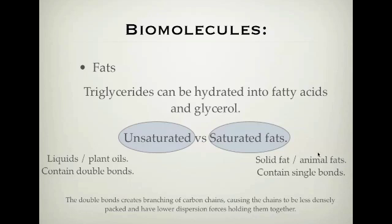Your butter comes from animal fat. Your margarine is plant oils which are turned into less double-bonded fats. The reason why saturated fats are solid and unsaturated fats are oils and liquids is due to the presence of double bonds. Double bonds cause branching in carbon chains — basically a double bond has a branch that cannot be bent and cannot be rotated around. This causes the chains to be less densely packed and therefore to have lower dispersion forces holding them together. When you have a solid fat that only contains single bonds, it's just one straight chain which can be densely packed together and flat-packed, giving a larger dispersion force and thus a higher melting point, making them solid fats.